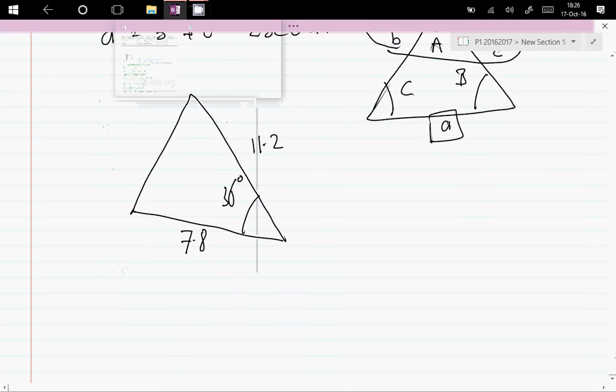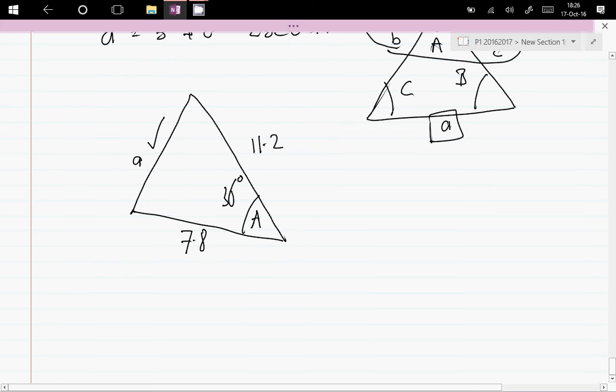I just got my calculator, so we can start this. We'll find first this side here. So we're thinking this is the angle A, this is the side a, this is b, this is c. So we're going to write a squared equals b squared plus c squared minus 2 times 7.8 times 11.2 times cosine 36.